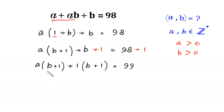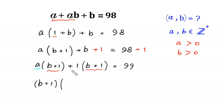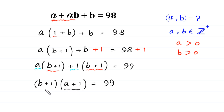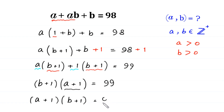As you can see, the expression (B plus 1) is a common factor. So we factor out (B plus 1) as a common factor, leaving (A plus 1) in the bracket. Writing (A plus 1) first, we get (A plus 1) times (B plus 1) is equal to 99.